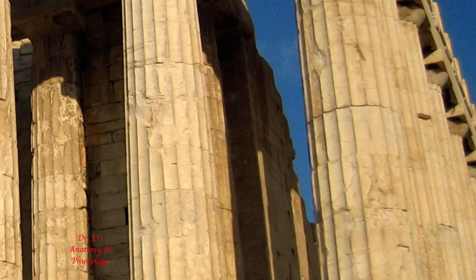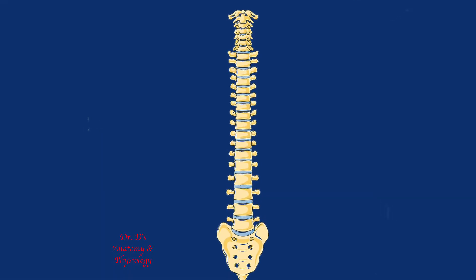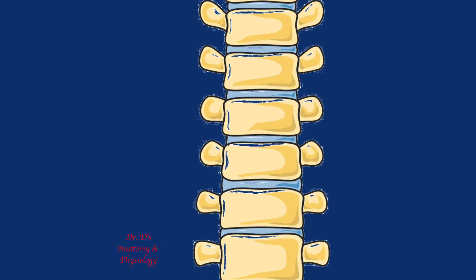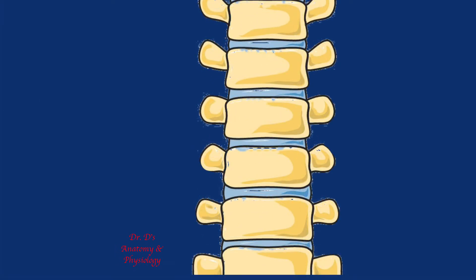The columns in this building are essentially supportive — they're holding the roof up. As such, they have strength; they have compressional strength. However, if there were a severe earthquake, these columns probably wouldn't hold up very well, because all the various forces acting upon the column would tend to cause them to crack and break up. The bodies of your vertebra are essentially a supportive element of the vertebra that enables the vertebral column to be a supportive structure.